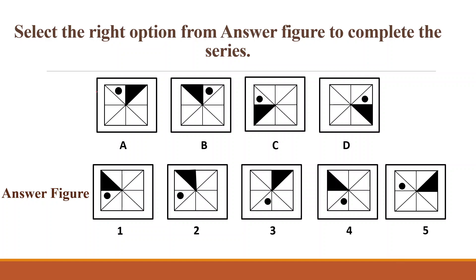Students, as you can see, this black circle is moving one step in the clockwise direction, then two steps in the anticlockwise direction, then three steps in the clockwise direction. Means in the answer figure, it has to move four steps in the anticlockwise direction. Now count with me the steps.